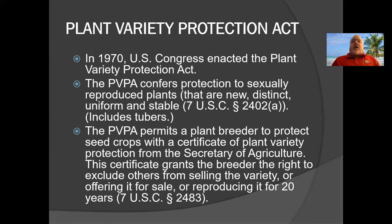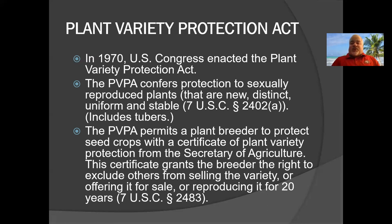The uniform and stable requirement is important — these can't be immature breeding lines. This has to be a finished, stable variety. The PVPA includes tubers, throwing the net around potatoes and other tuber-reproduced crops. There are many tubers beyond just potatoes, especially in horticultural plants used in landscaping. The PVPA permits a plant breeder to protect seed crops with a certificate of plant variety protection from the Secretary of Agriculture.